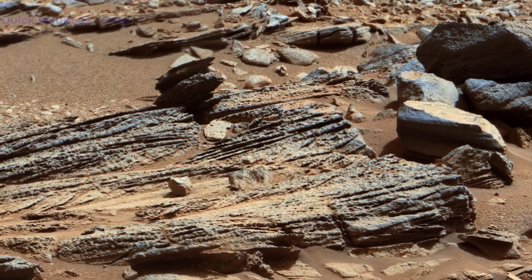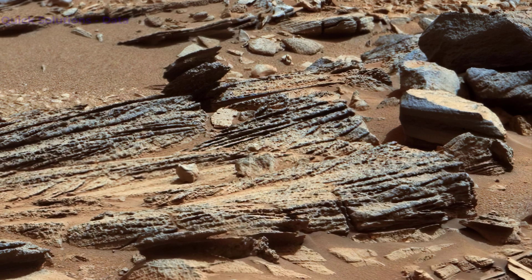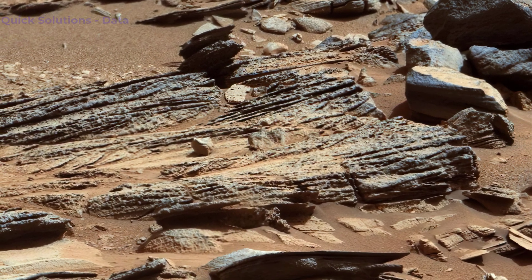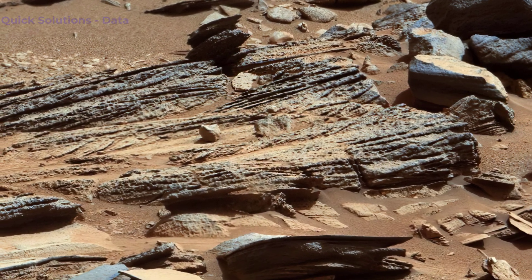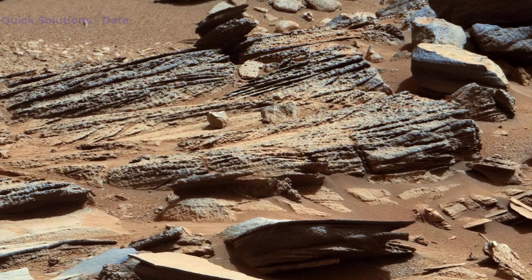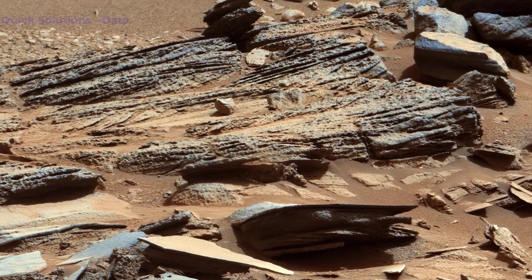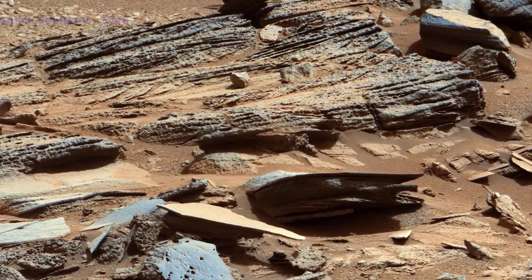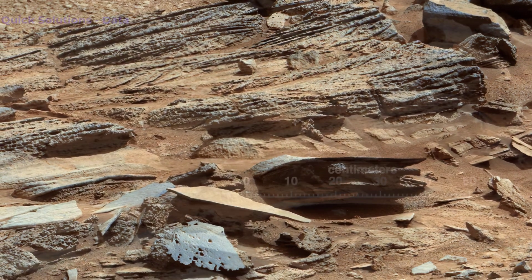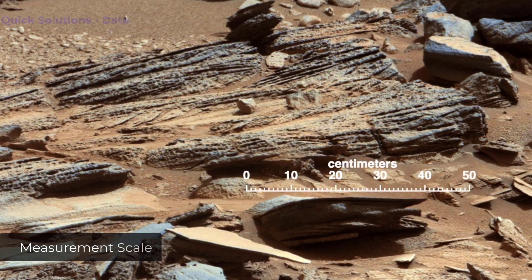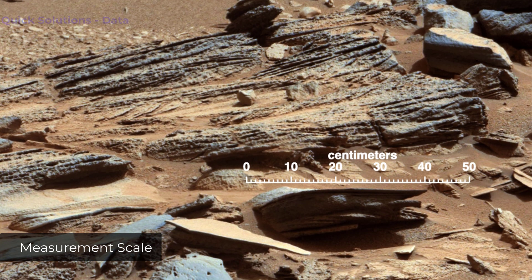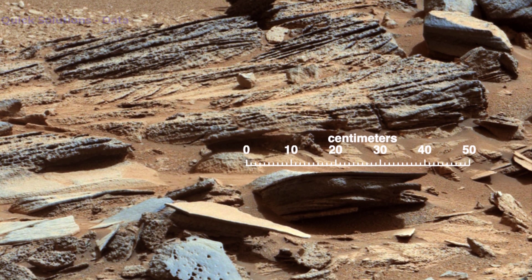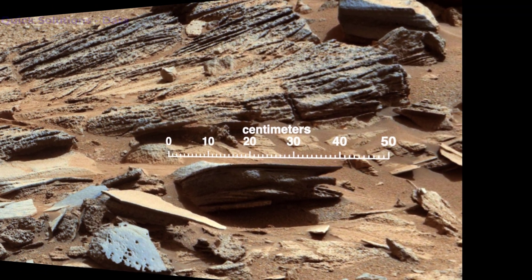The grain sizes here are coarse enough to exclude wind transport. This cross-bedding occurs stratigraphically above the Gillespie unit in the Yellowknife Bay area of Mars Gale Crater, and is therefore geologically younger.